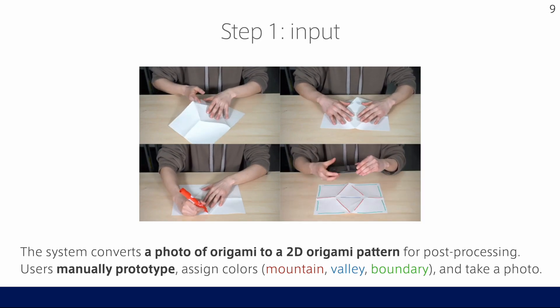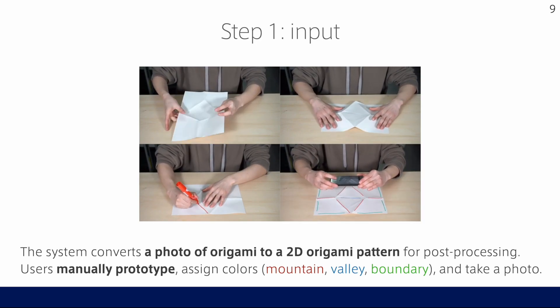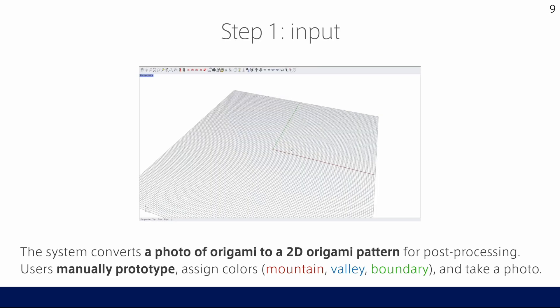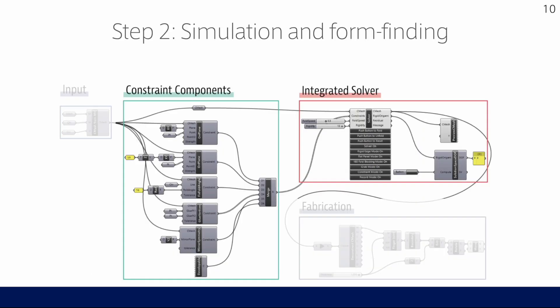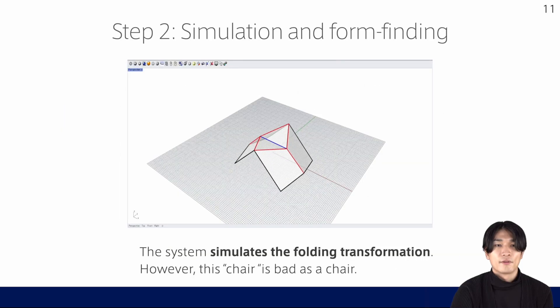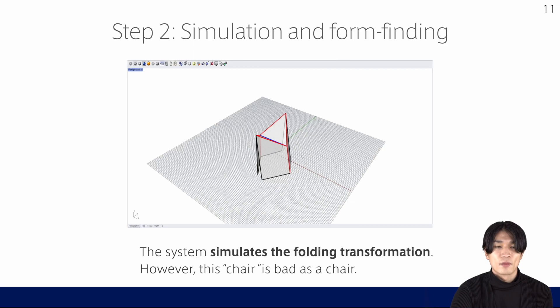One input option is image recognition, in which the system takes a photo as input and converts it to a 2D pattern for post-processing. Now, he's prototyping an origami chair by manually folding a sheet of paper, and he assigns different colors to creases. Next, the user conducts simulation and form finding. Here, the system automatically simulates the folding transformation.